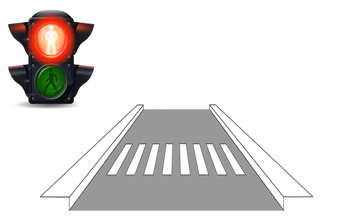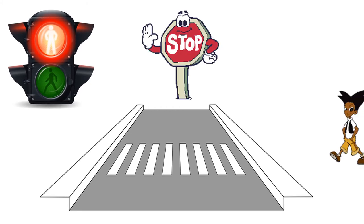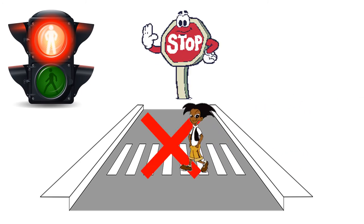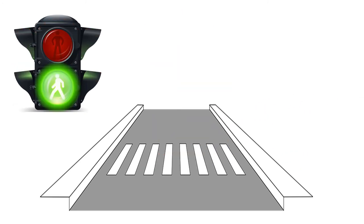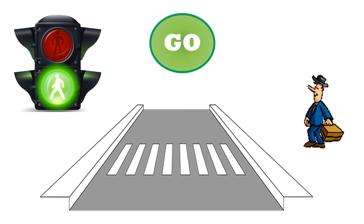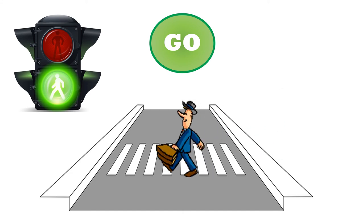In the traffic light, if you see the red man, you have to stop — you cannot cross the road. And if you see the green man, it means you can go and cross the road safely.